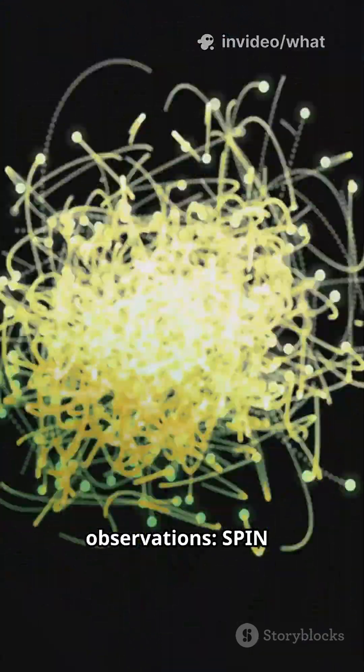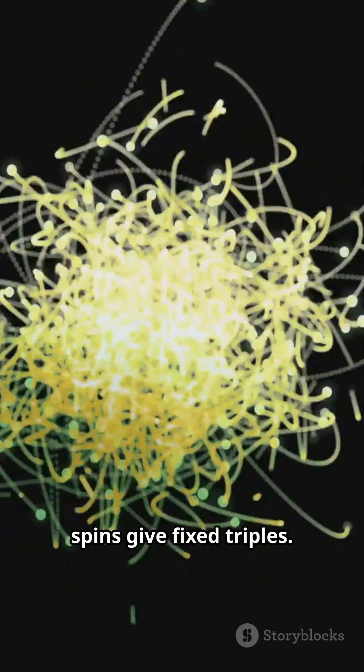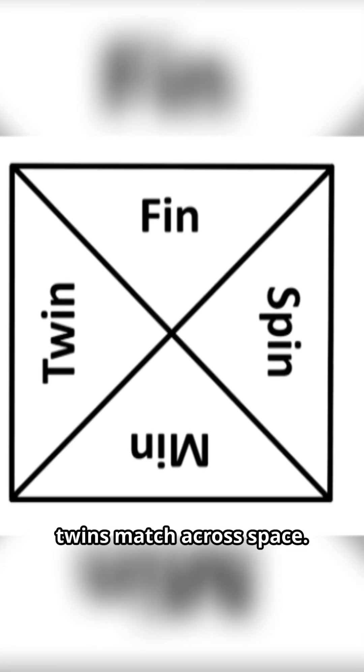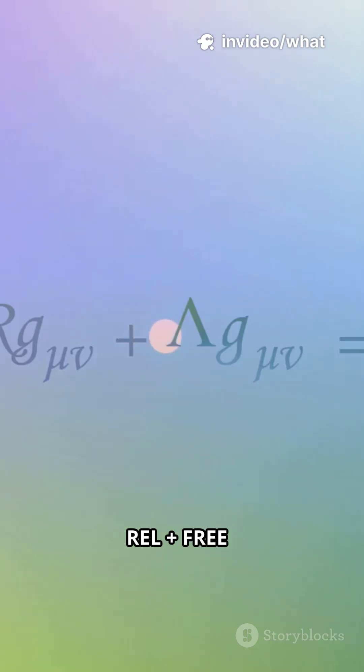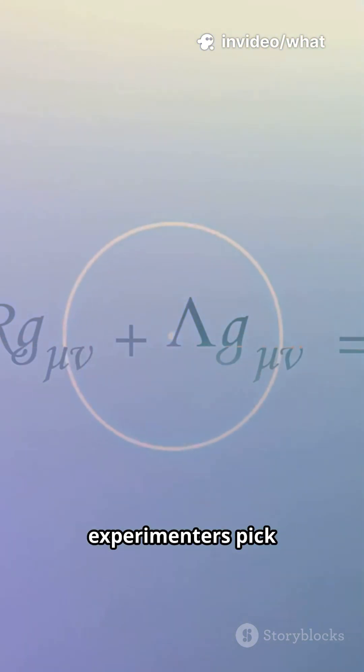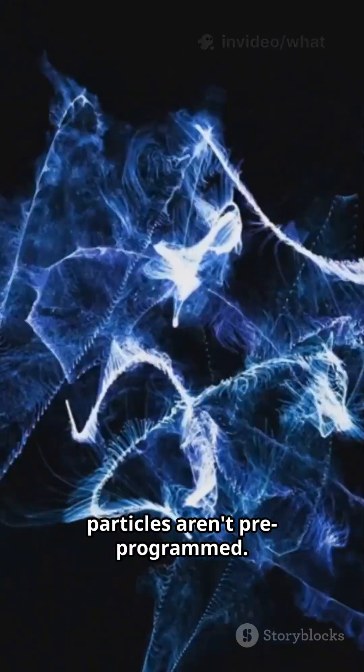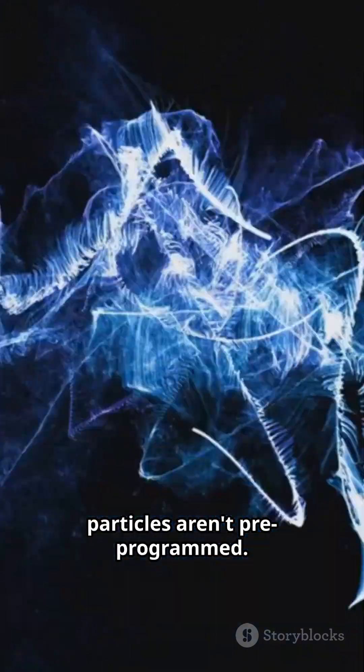Based on observations: spin - certain quantum spins give fixed triples. Twin - entangled twins match across space. REL plus free - experimenters pick settings, no faster than light influence. Together, if we are free, particles aren't pre-programmed.